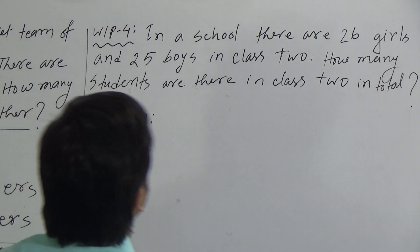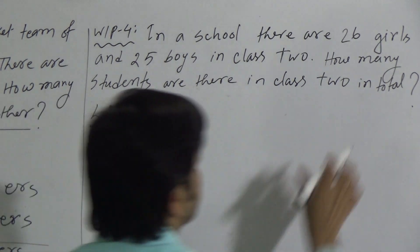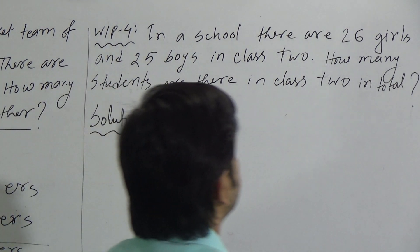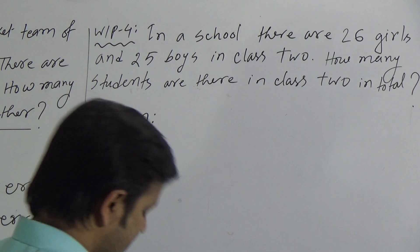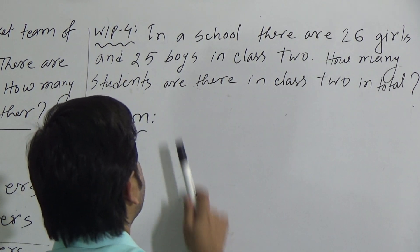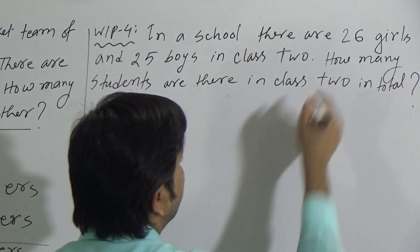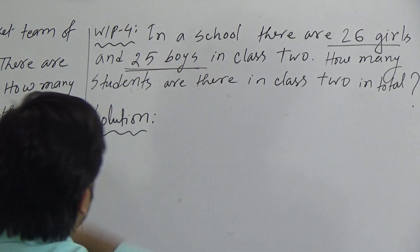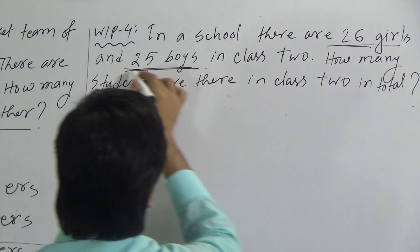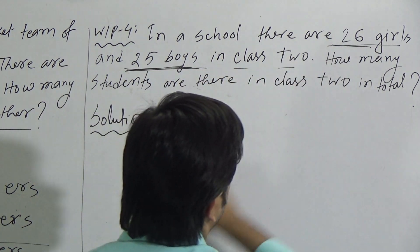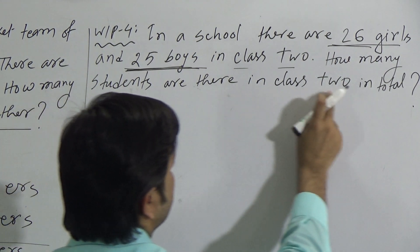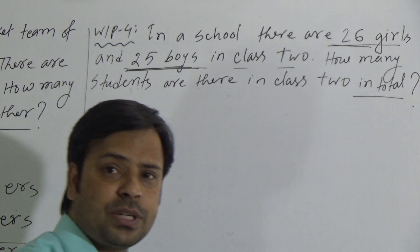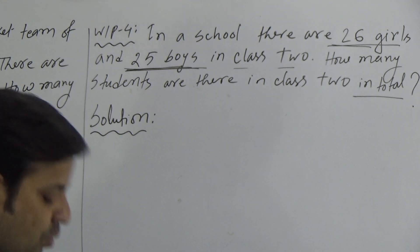See the question: In a school there are 26 girls and 25 boys in Class 2. How many students are there in Class 2 in total? So we have 26 girls and 25 boys in Class 2. As the question says 'in total,' we have to determine the total number of students, which means we have to do addition here also.